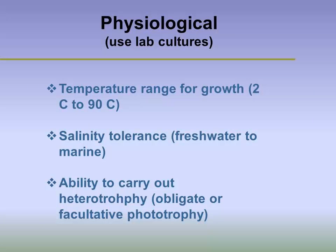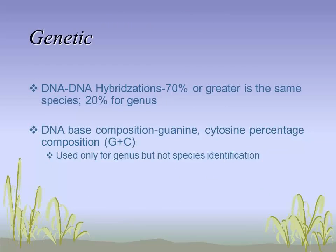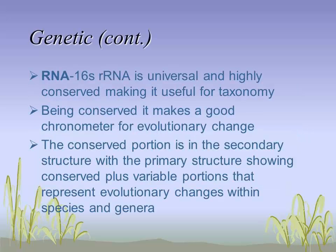The morphological characteristics important for taxonomy of toxic cyanobacteria condense down to: unicells, colonial unicells, single filaments, colonial filaments, presence or absence of heterocysts, and presence or absence of spores. Physiological taxonomy is less important for our purposes. The pigments — chlorophylls and phycobilins — are important. The key thing in new taxonomy is 16S rRNA, where PCR and genetic typing are used. New taxonomy is referred to as polyphasic keys, using classic morphology and genetics, with 16S rRNA being the most important genetic component.